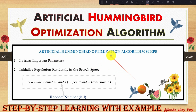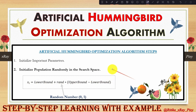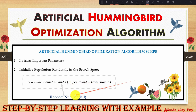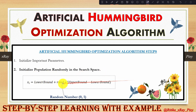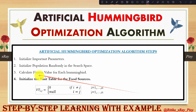The steps in the Artificial Hummingbird Algorithm begin with initializing the important parameters. Next, the population is initialized randomly in the search space using an equation for N agents, where lower bound and upper bound define the search space boundary and rand is a normally distributed random value within the range [0, 1]. Any fitness function — also known as an objective function, evaluation function, or cost function — is then used to calculate fitness values for each hummingbird.